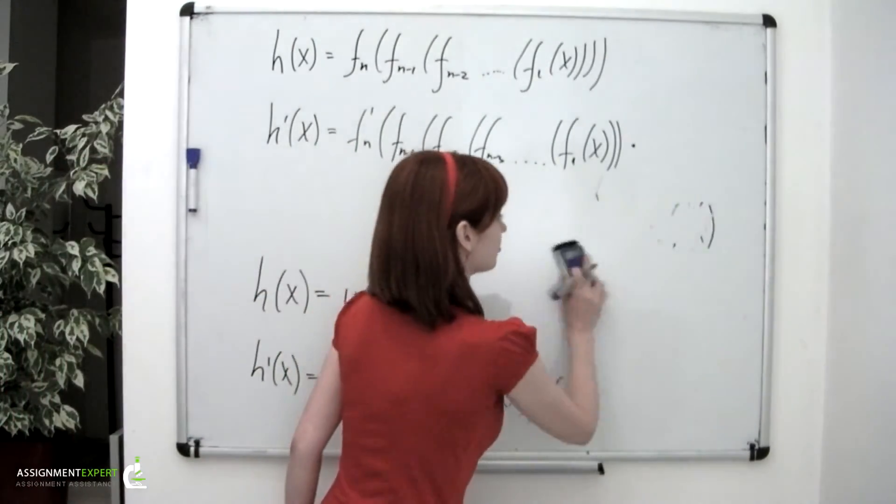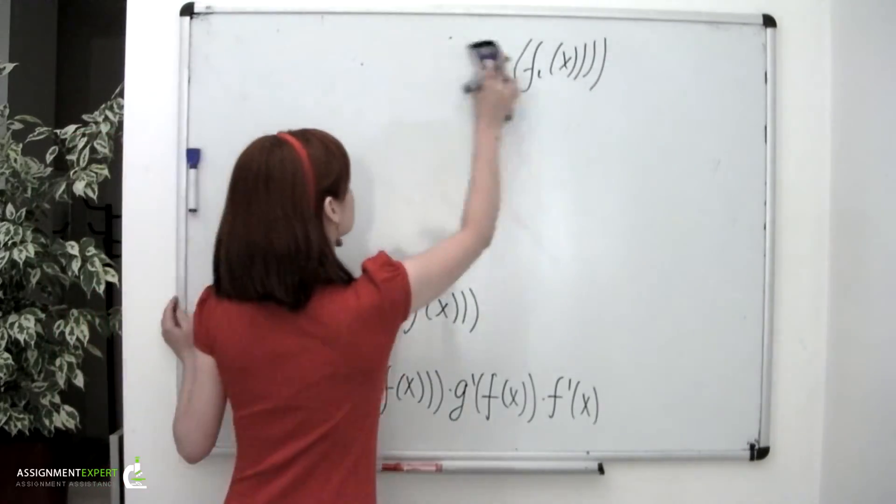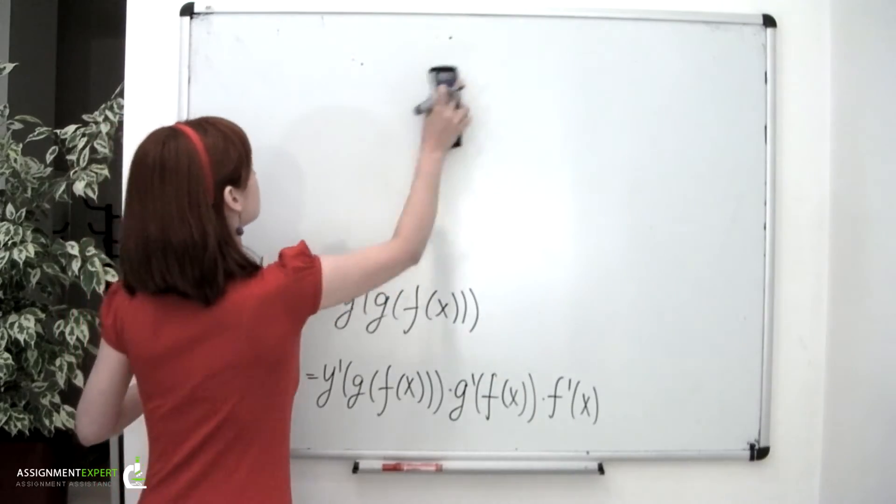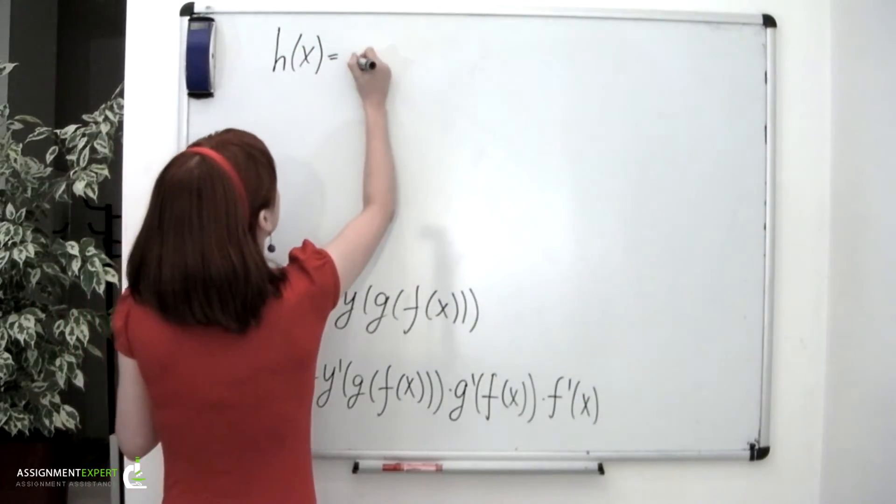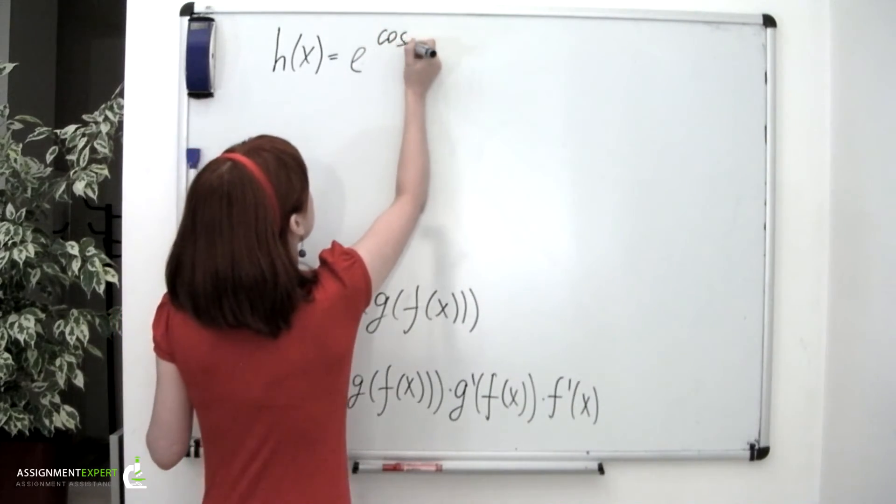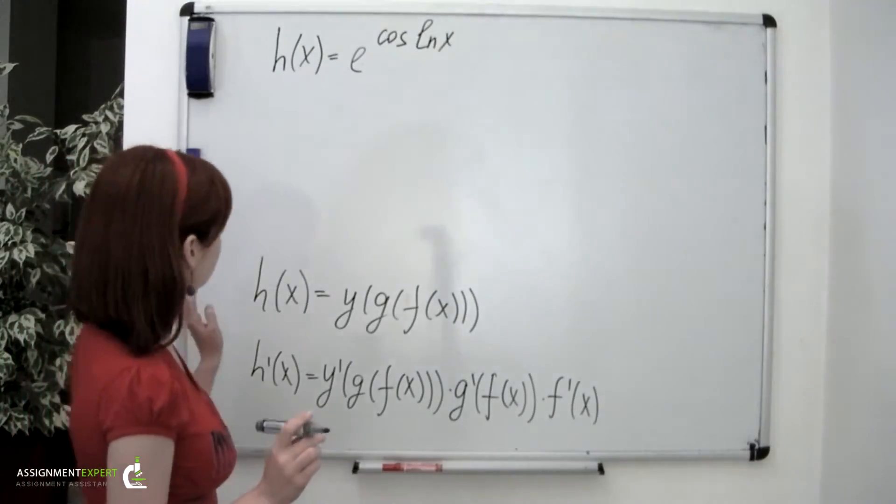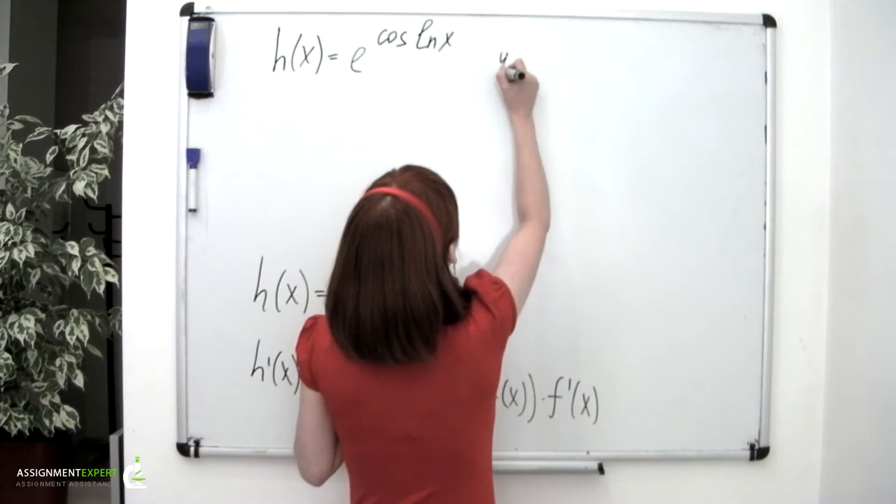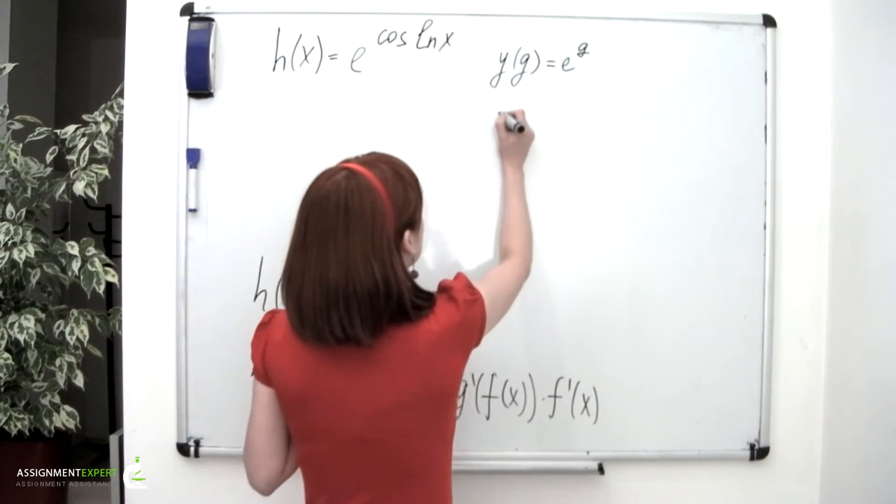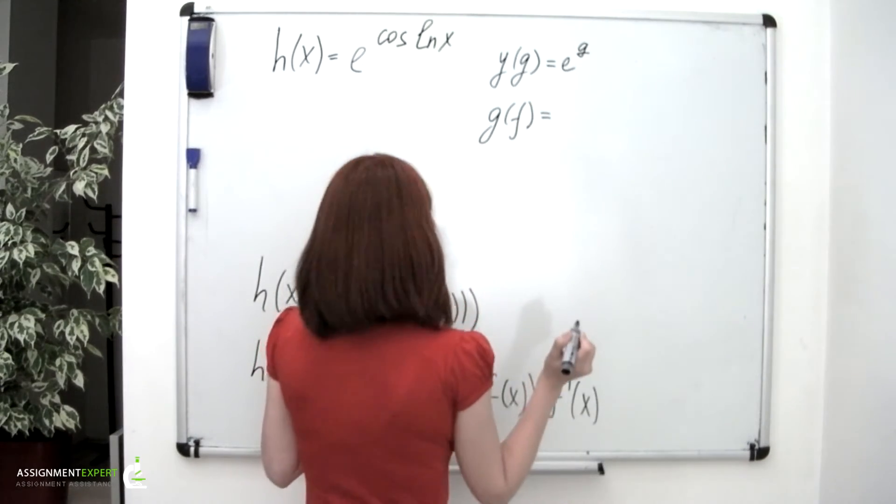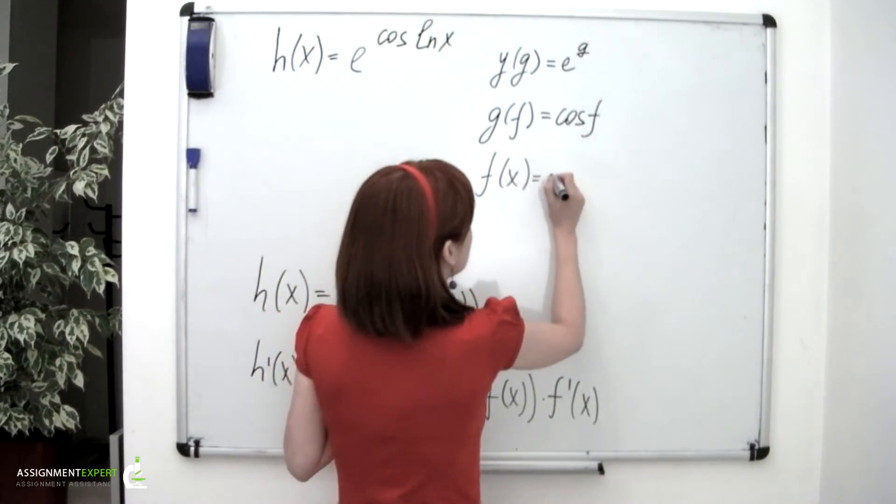Now let's get back to our example. So we had h equal to e taken to the power of cos of ln of x. Now referring to these two formulas we have just written, we have that y function equals e taken to the g power, g function equals cos of f, and finally f function is ln of x.